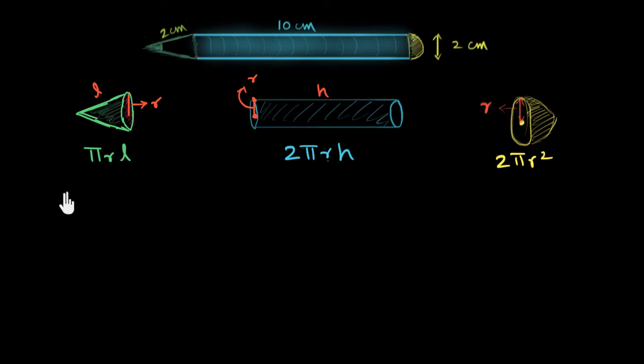So πrl, that's 22/7, that's usually what I take π as, unless they say something else, multiplied by r. r is 2 centimeters. That's a mistake that I've made many, many times. It's actually r is half of 2 centimeters because this 2 would be the diameter of the circle. It's the width of the pencil or the diameter of the circle. So r would be half of that, r would be 1 centimeter.